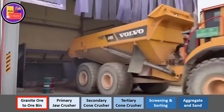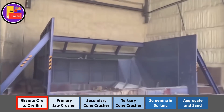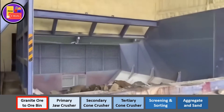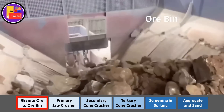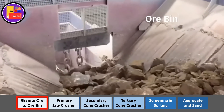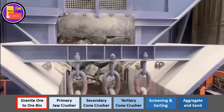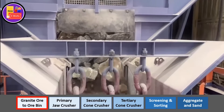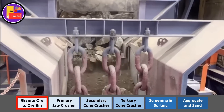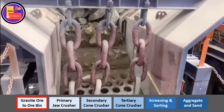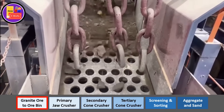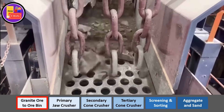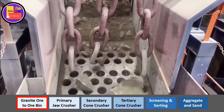The raw granite boulders are transported from the mine to the aggregate production plant in large dump trucks. Sand and the smaller size aggregate generated in the process will be separated out using a vibrating screen.